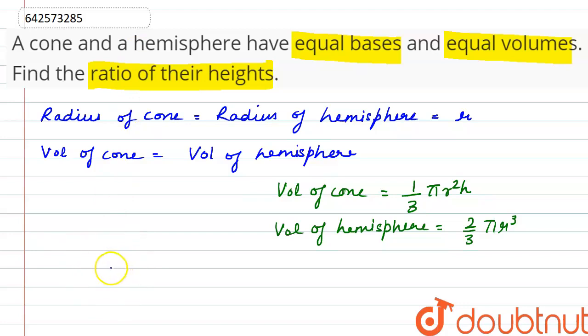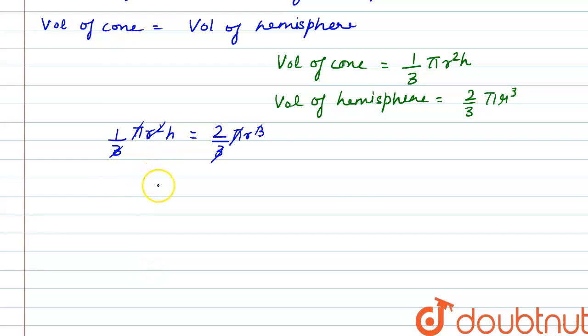So according to the question, 1 by 3 pi R square H is equal to 2 by 3 pi R cube. So pi gets cancelled out, 3 also gets cancelled out, and R square also gets cancelled out. So we have here H is equal to 2R.